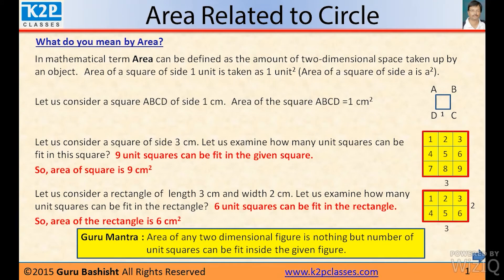So Guru Mantra: area of any two-dimensional figure is nothing but the number of square units that can be fit inside the given figure. Here, nine unit squares can be fit in this figure, so the area is 9 cm². Here, the number of unit squares fit into this figure is six, so area is 6 cm².